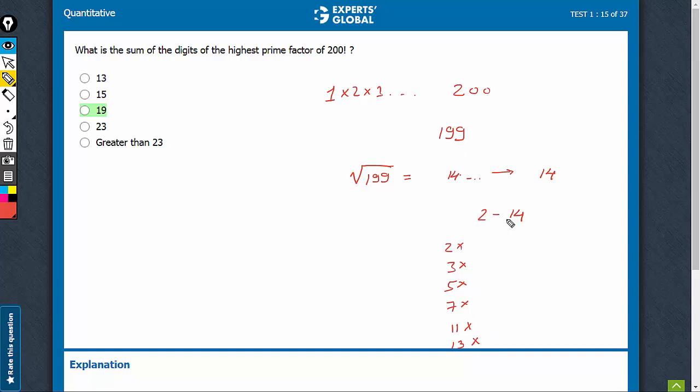So, none of the prime numbers in this range divide. Therefore, 199 is a prime number and sum of digits of 199, 1 plus 9 plus 9, 19. The answer is option C.